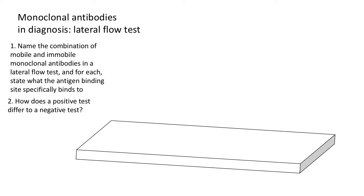This is a revision video on monoclonal antibodies, specifically looking at the lateral flow test. The common example is the pregnancy test, but more recently we're familiar with the lateral flow test as a diagnosis for COVID-19. There are two revision tasks here — pause and complete those and then we'll go through the answers.